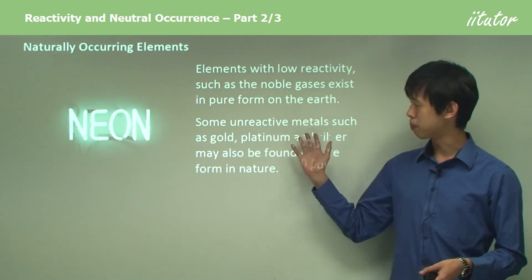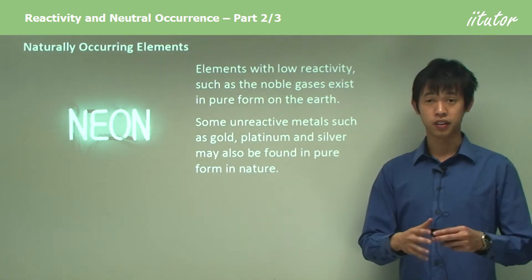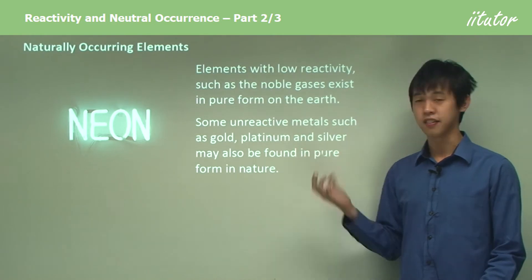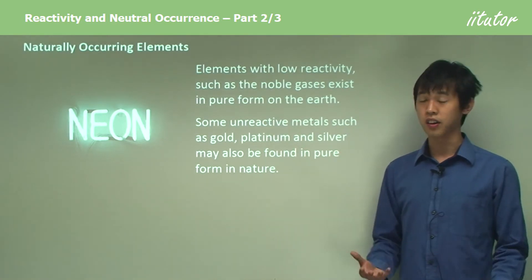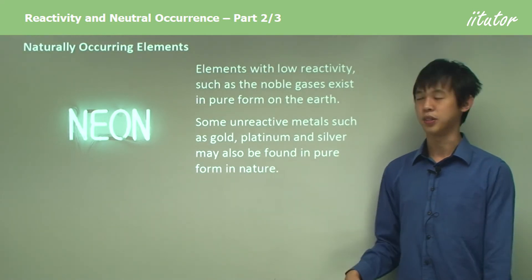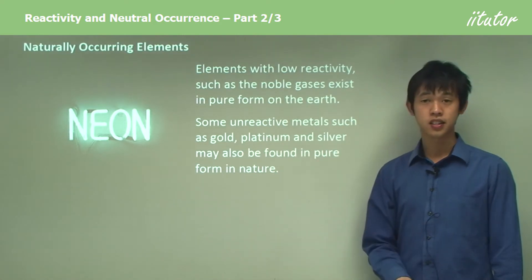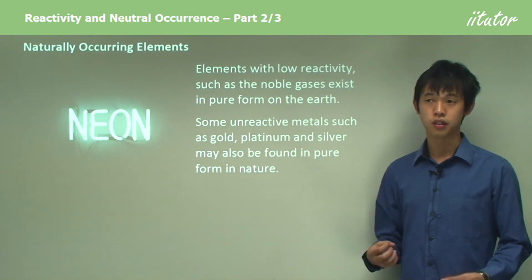A more popular type of element that we see in terms of being naturally occurring are these unreactive metals. We see a lot around the place: gold, platinum, and silver—jewelry and all those other shiny things that we buy. These actually exist as pure elements. Gold we can actually mine as pure gold.